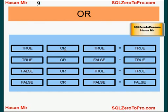If either side is true, the result is true. True OR true is true, true OR false is true, false OR true is true, and false OR false is false. So with OR, if either side is true the result is true. With AND, if either side is false the result is false.